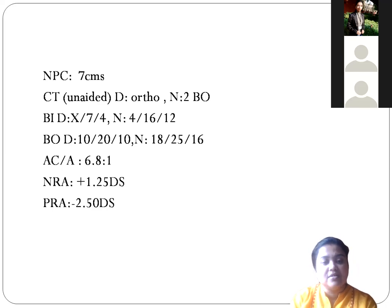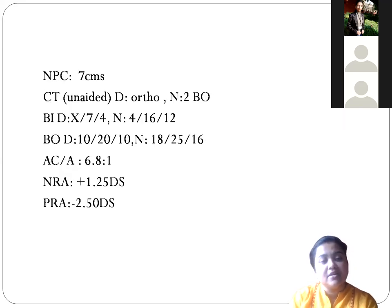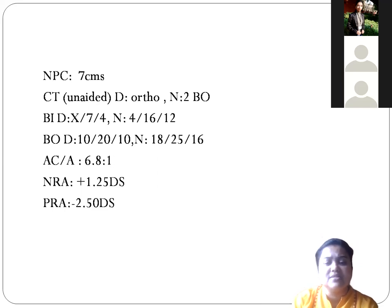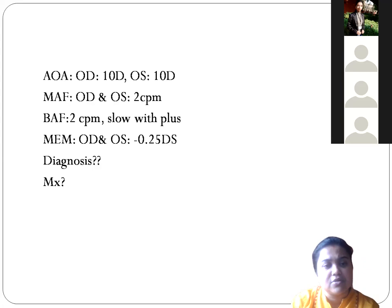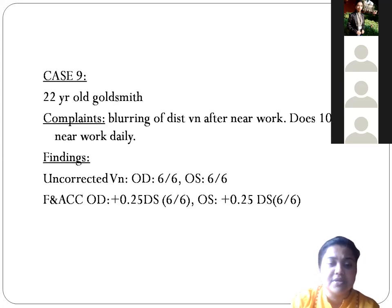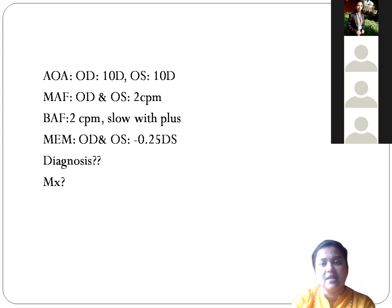He has 2 prism esophoria for near. If we prescribe plus 0.50 for near work, his distance vision will be affected since retinoscopy showed minus 0.25, but for near he will be very comfortable with plus 0.50 glasses. The 2 prism esophoria need not always be corrected — our goal is simply to relax accommodation. So plus 0.50 can be prescribed for near work. We also need to give in-office therapy: with plus 0.50 lenses, the patient will do the hart chart exercise and flippers exercise.